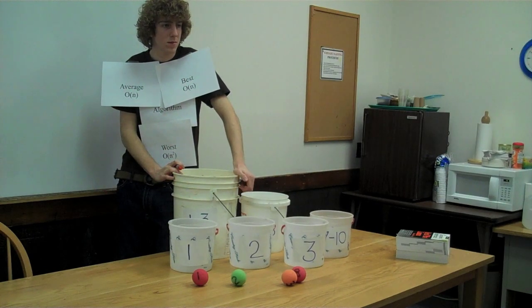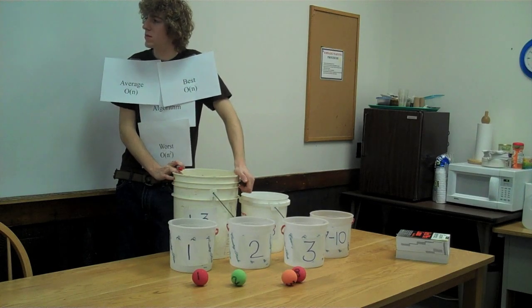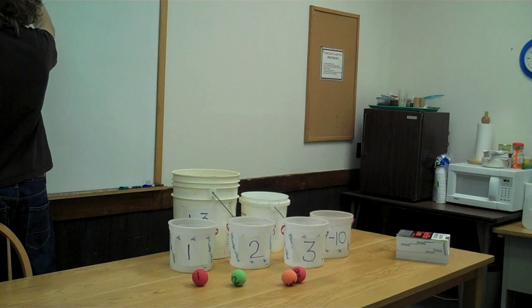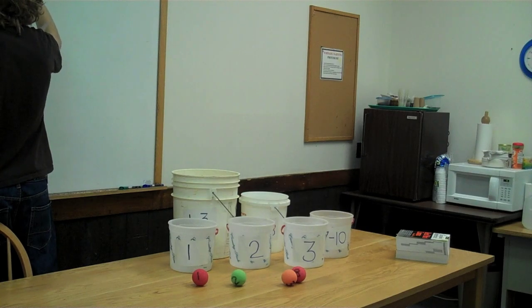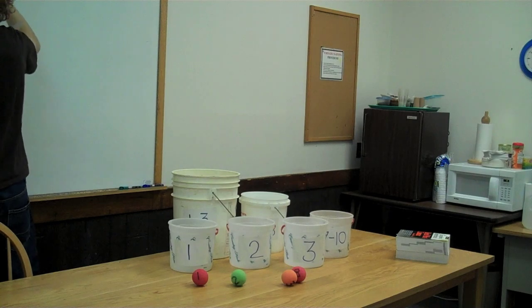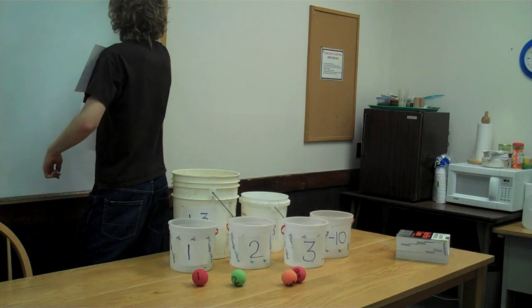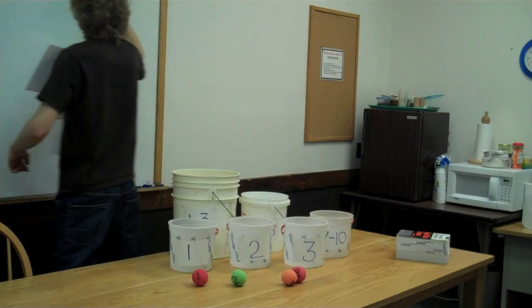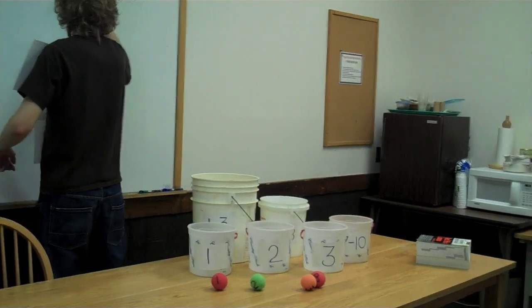For example, SAT scores have a minimum value of 0 and a maximum of 2400. However, most scores will be nearer to the middle rather than the outer limits. The bucket sort can perform well when dealing with data such as this.